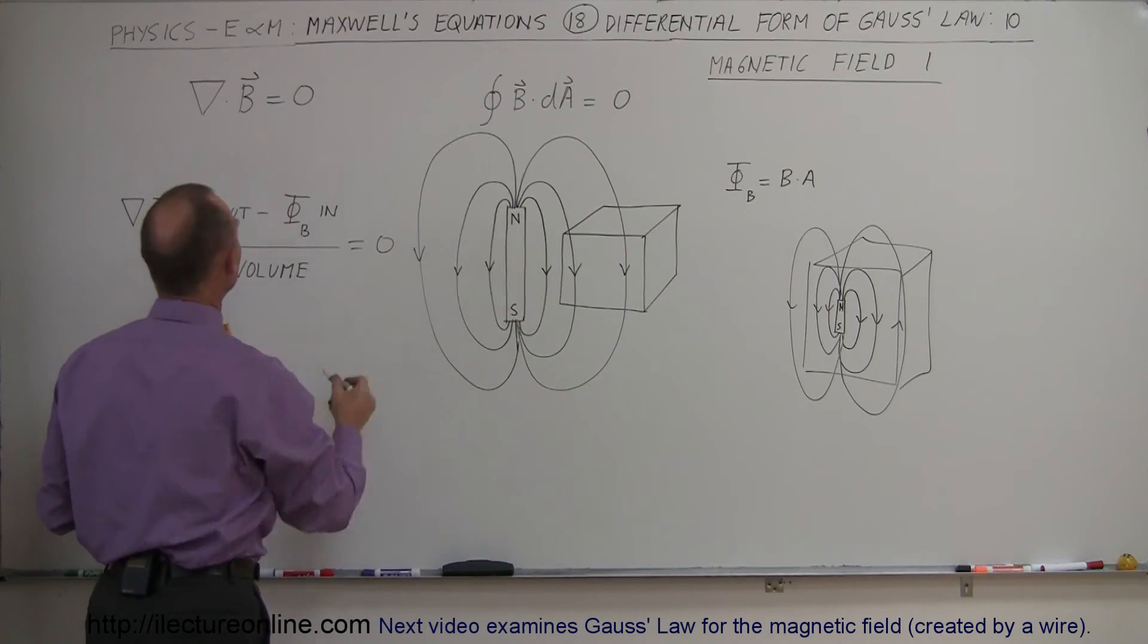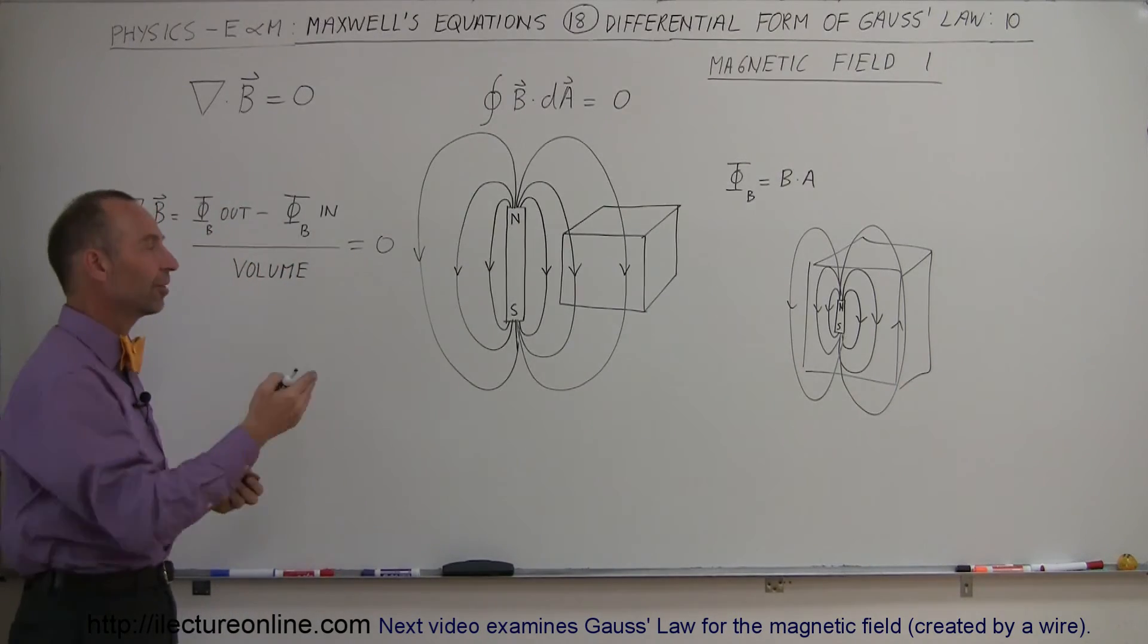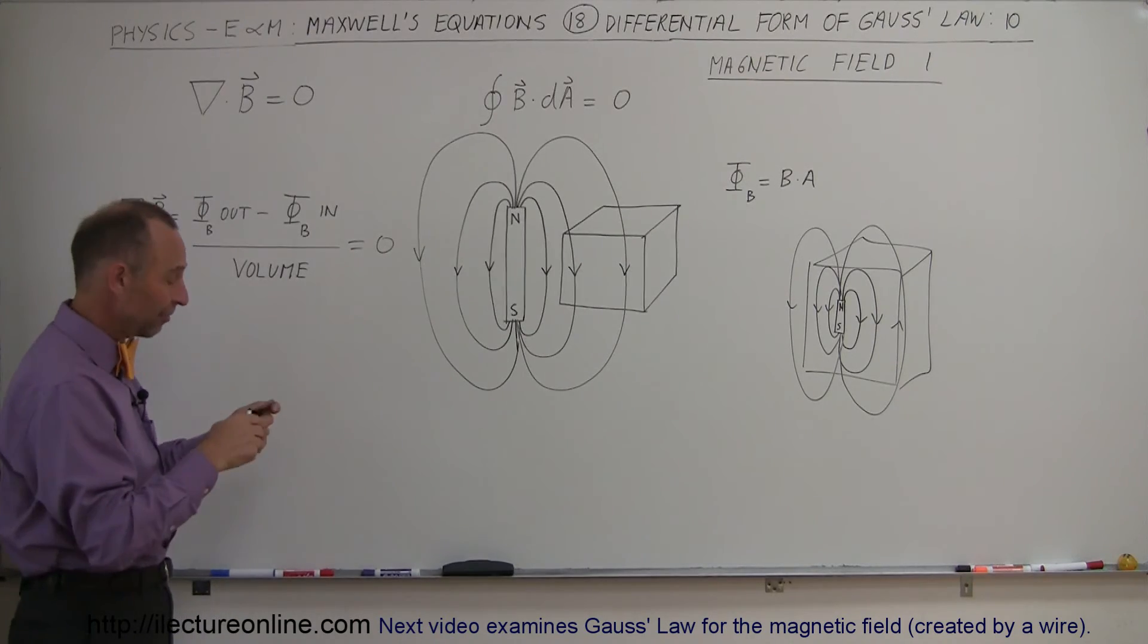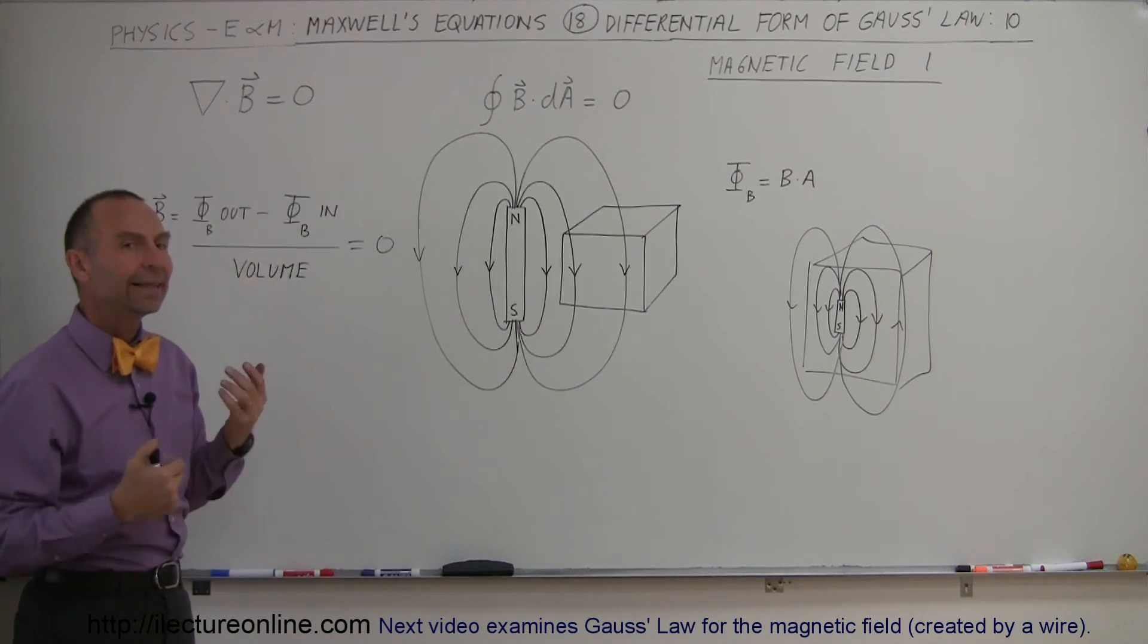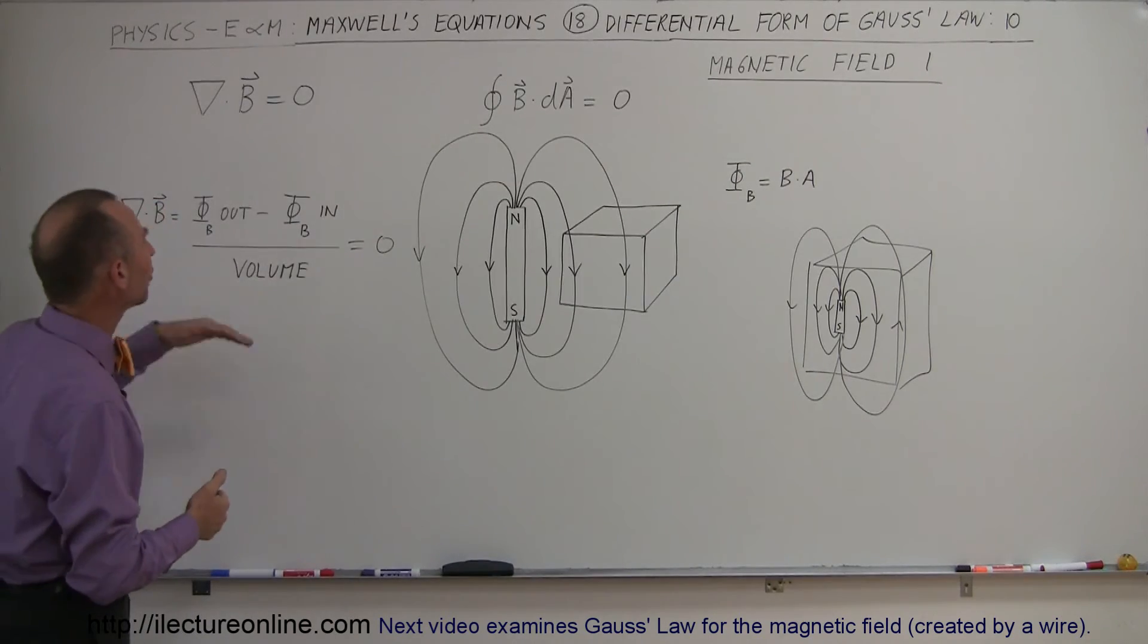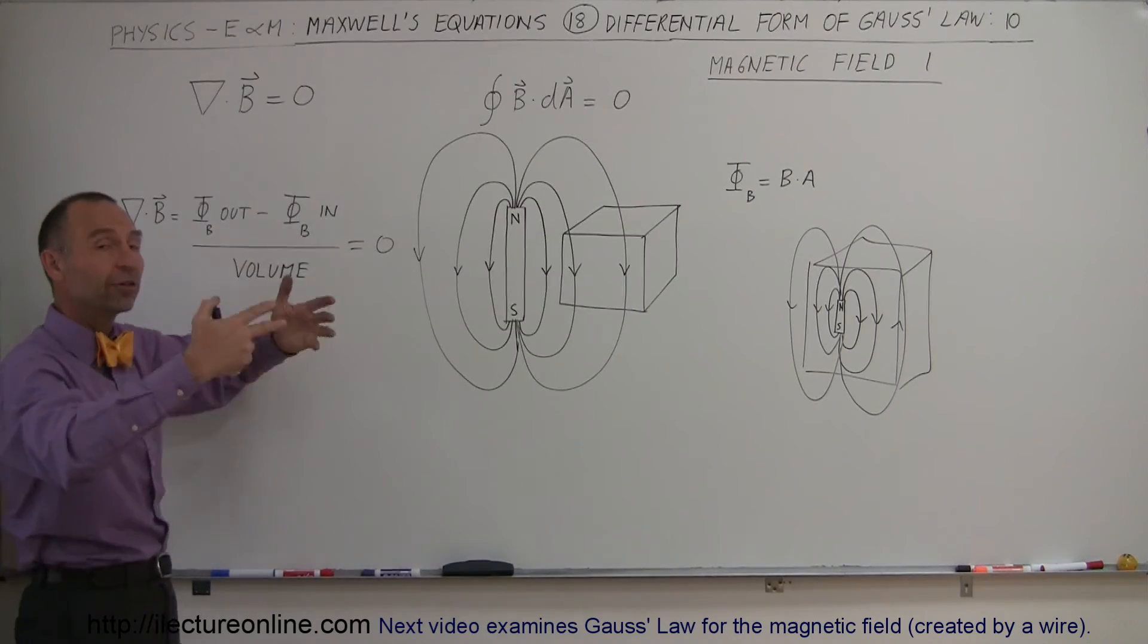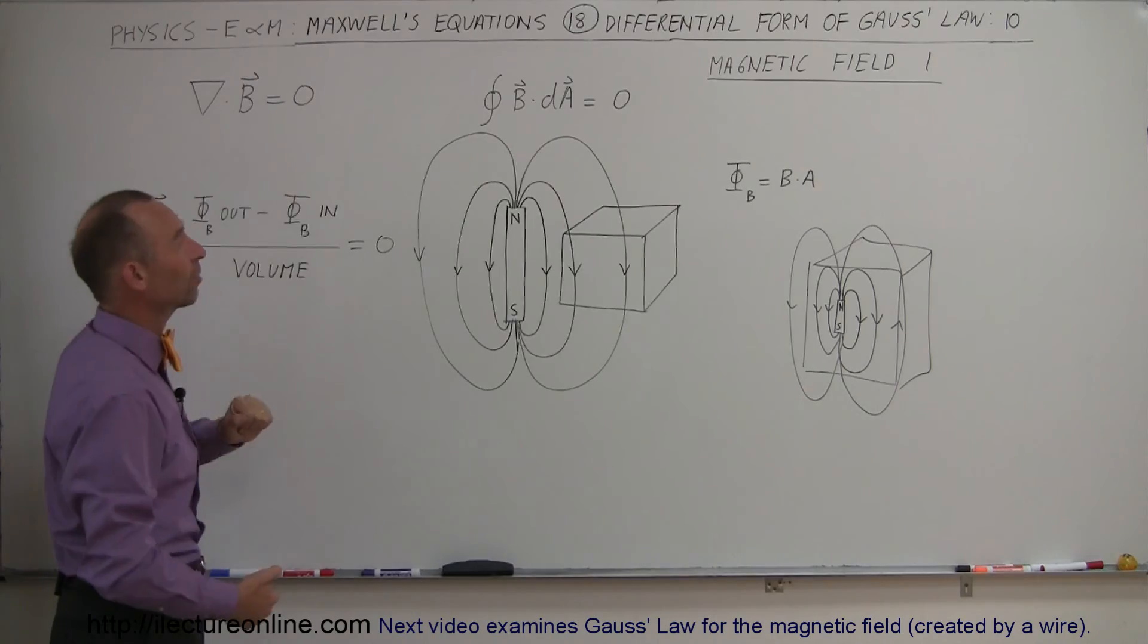And therefore, we conclude that if we do the divergence of the magnetic field, we always get zero because the same amount of flux is leaving the cube, is entering the cube, and therefore, there's no net flux left in the cube, so to speak. It's not like there's more going in as there's coming out. And that is what Maxwell was indicating with this particular equation. He says, if we draw a Gaussian surface, we have the same amount of flux going in as out. So therefore, we know that the divergence of the magnetic field always has to be equal to zero.